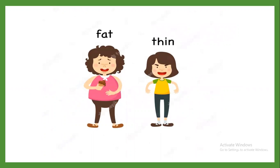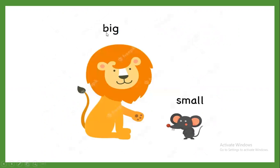The first one is fat. The opposite of fat is thin, T-H-I-N, thin. Next is big, B-I-G. The opposite of big is small, S-M-A-L-L, small.